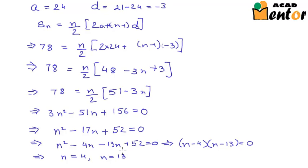Now both these values are admissible. That means that the sum of the AP 24, 21, 18 and so on up to 4 terms is also 78 and up to 13 terms is also 78. Now you must be wondering why is this so? This is because the common difference here is negative 3 and the series goes on decreasing. That means after some point you would start getting negative numbers and they will start cancelling the sum that was built up due to the positive numbers.